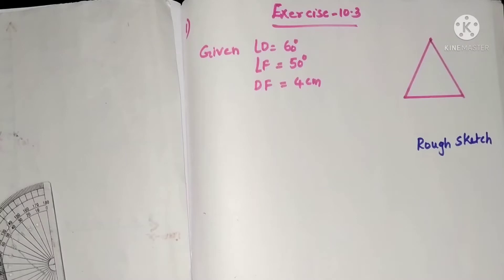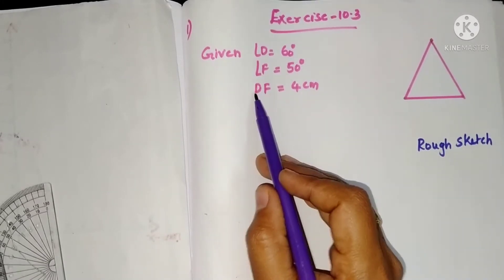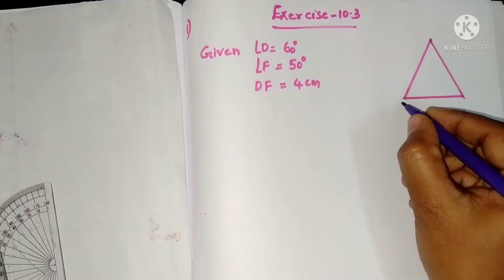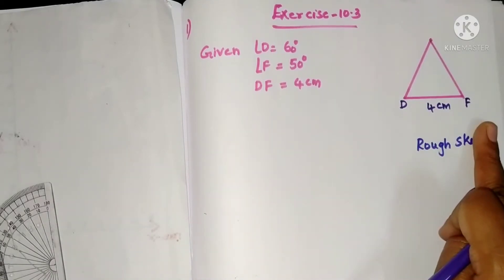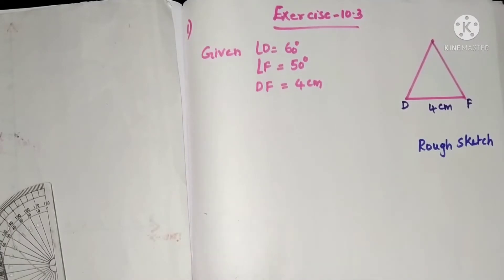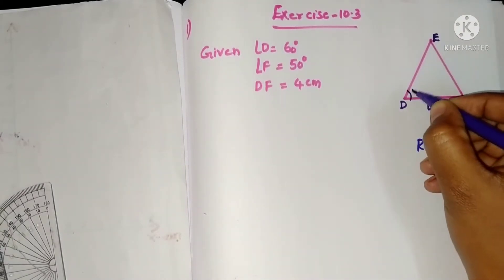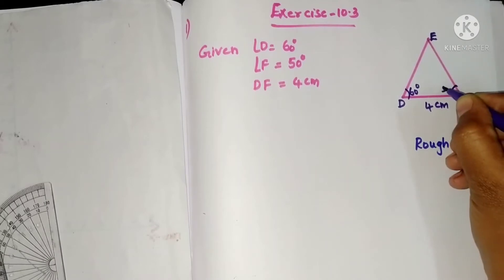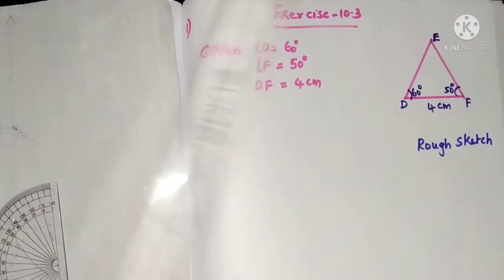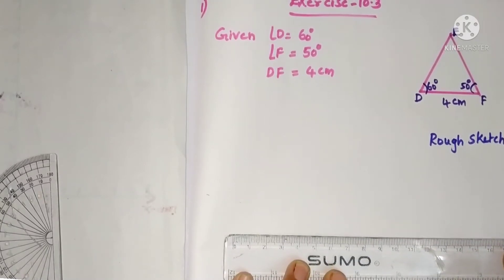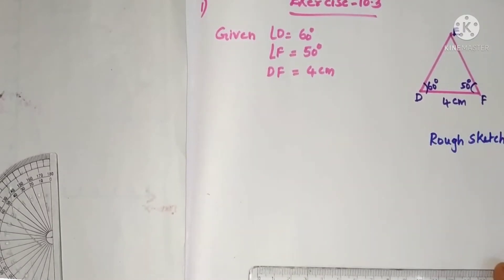First, draw the rough diagram — a triangle. The triangle name is DEF. DF equals 4 centimeters, so DF is the first side to draw. Angle D is 60 degrees, and angle F is 50 degrees. Label both angles on the rough sketch.